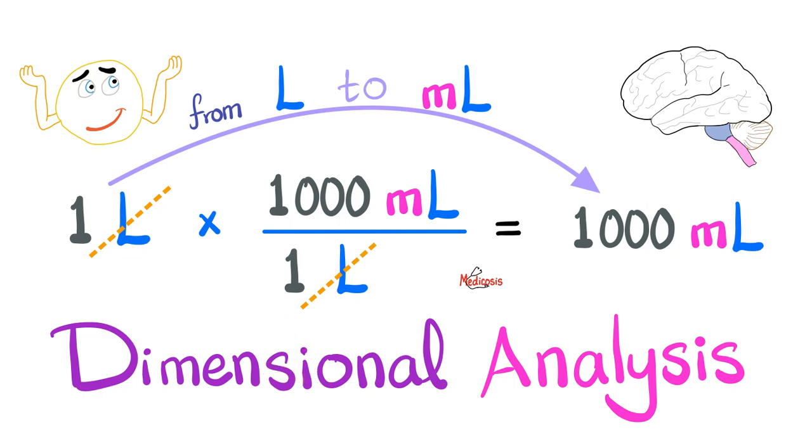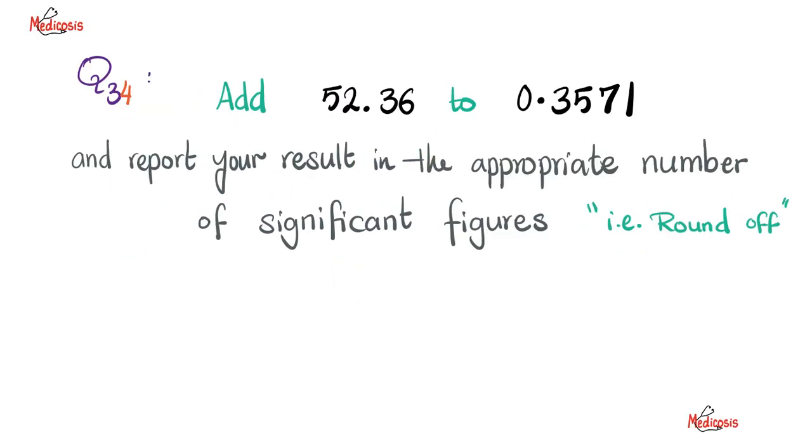In the last videos, we talked about how to read graphs, how to know if two entities are directly proportional or inversely proportional. We talked about significant figures and the scientific notation. Let's start by answering the two questions of the previous video. Can you add 52.36 to 0.3571 and report your result in the appropriate number of significant figures? Please pause and try to answer this yourself.